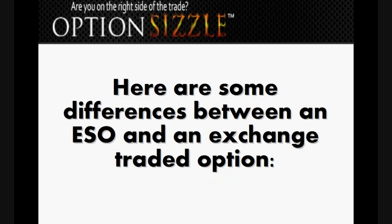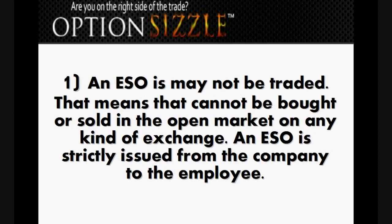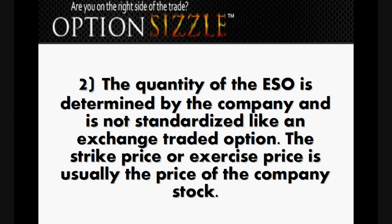Here are some differences between an ESO and an exchange traded option. First, an ESO may not be traded — it cannot be bought or sold in the open market on any kind of exchange. An ESO is strictly issued from the company to the employee. Second, the quantity of the ESO is determined by the company and is not standardized like an exchange traded option. The strike price, or exercise price, is usually the price of the company's stock.